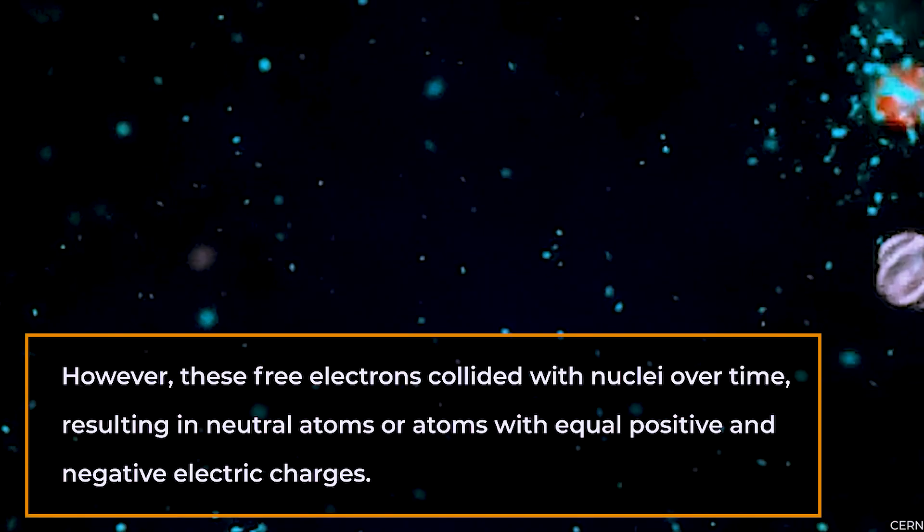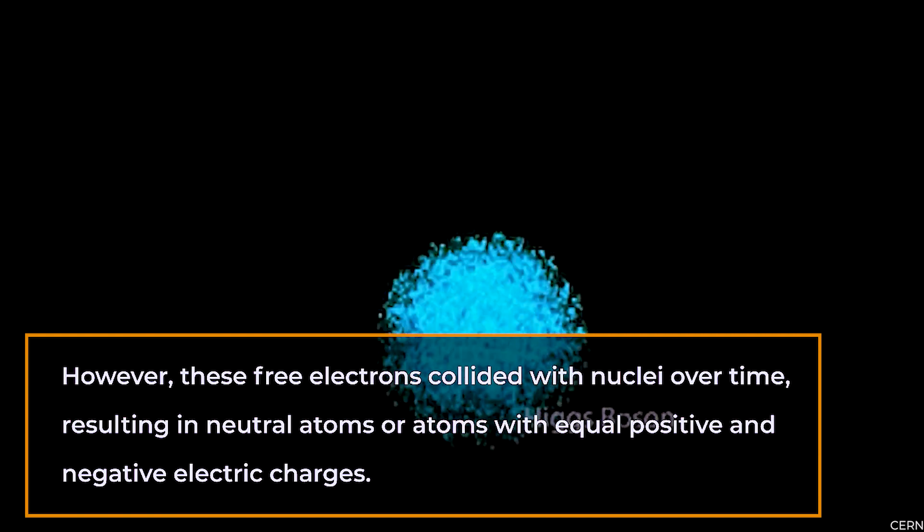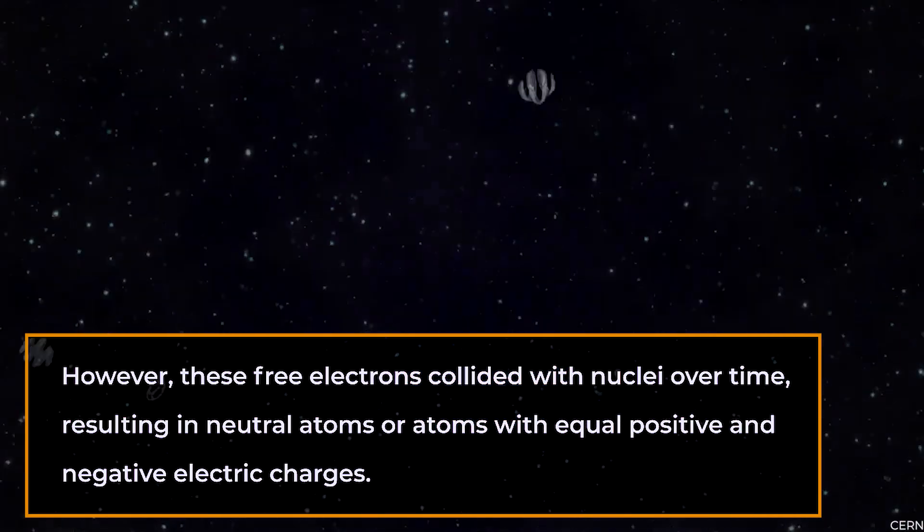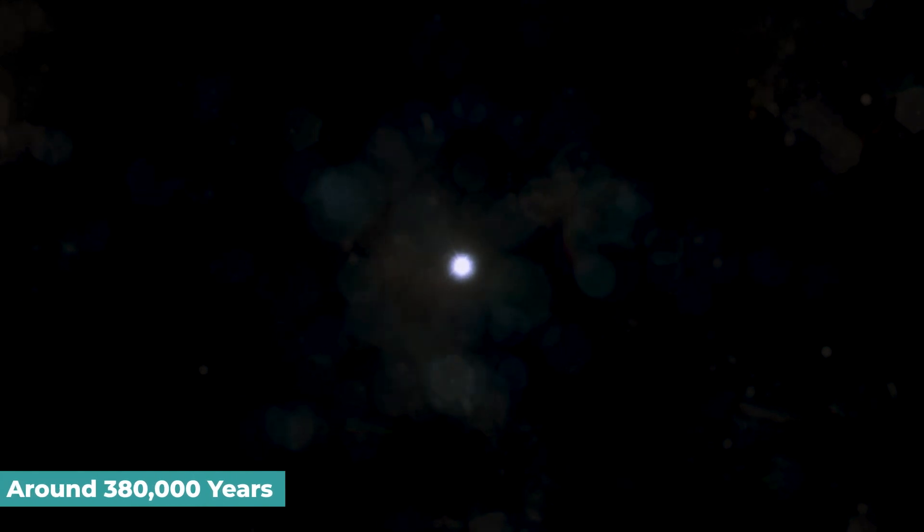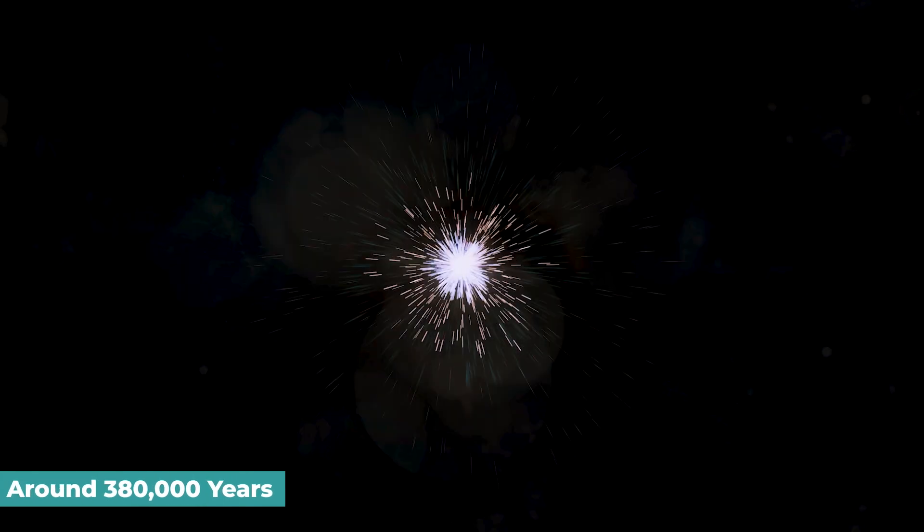However, these free electrons collided with nuclei over time, resulting in neutral atoms or atoms with equal positive and negative electric charges. Around 380,000 years after the Big Bang, the light eventually shone through.